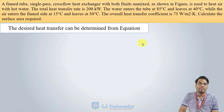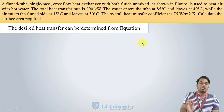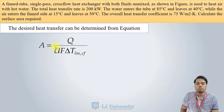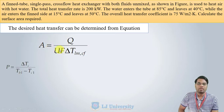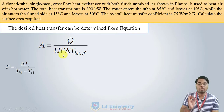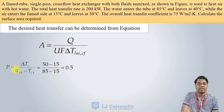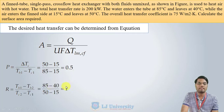To find F and ΔT, we need all four temperature values — TH1, TH2, TC1, and TC2 — which are available in the problem. To find F, we first calculate P and R. Putting in the temperature values, we get P = 0.5 and R = 1.